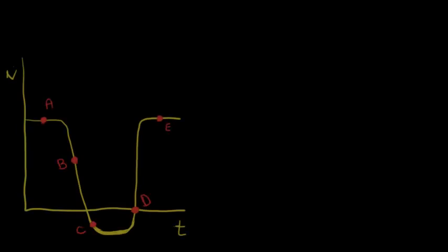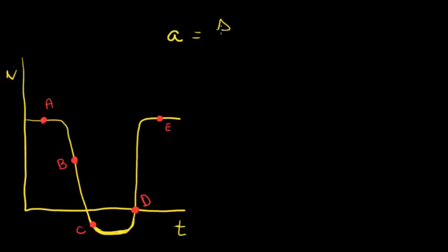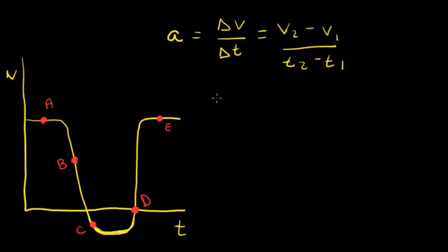So first, we will plot out the graph with the five points, and then the first thing we do is define acceleration. Acceleration equals the change in velocity over the change in time — in other words, the final velocity minus the initial velocity divided by the final time minus the initial time. We can assume that time is always positive, so the only thing we have to worry about in this problem is the change in velocity at each of the five points.